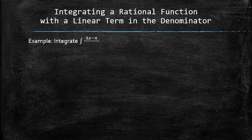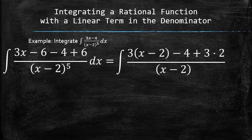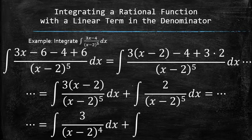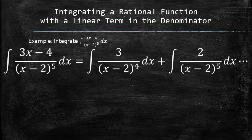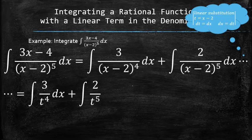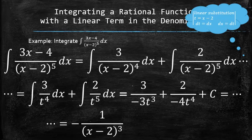Let's do an example. First, we add and subtract 6 in the numerator and regroup the terms. Then, we use the linearity property of the integrals and split the original integral into two. After reducing the rational function in the first integral, we now have a pair of simple integrals of similar type. We set up the same linear substitution for both of them, and as a result we have two simple integrals in terms of t. We finish the process by finding the antiderivatives and plugging the original expression x minus 2 back for t.